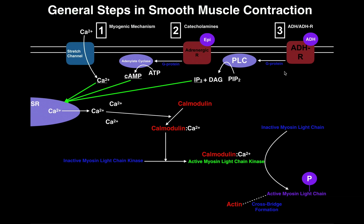In this video we're going to discuss the general steps involved in smooth muscle contraction. Recall that we have three general types of muscle: skeletal muscle, cardiac muscle, and smooth muscle. Skeletal muscle is of course what we find on the skeleton — it's what we think of when we go to the gym and we're moving the limbs.